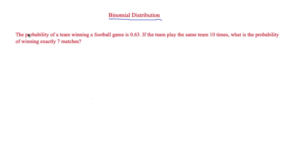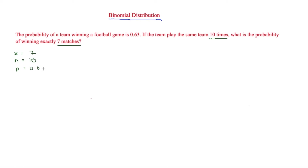We're going to use the binomial probability distribution rather than the cumulative distribution, because they are winning exactly seven matches — not eight or nine. So x equals 7, n equals 10, and the probability p equals 0.63.